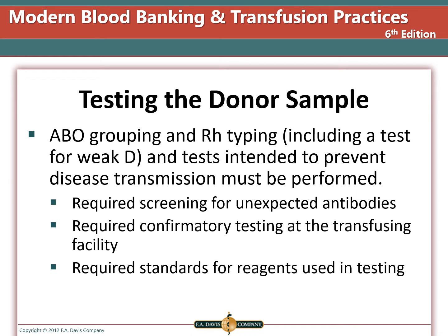The ABO type must be confirmed by a facility receiving blood from another facility. This includes a front ABO type and an RH type with weak D for RH negative units.